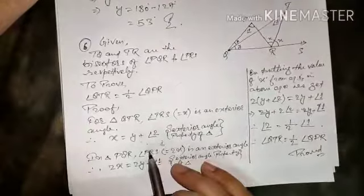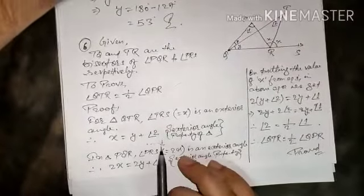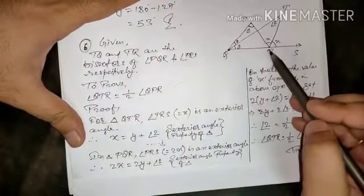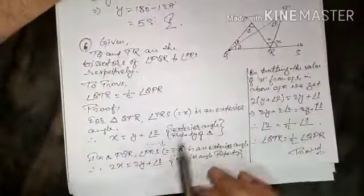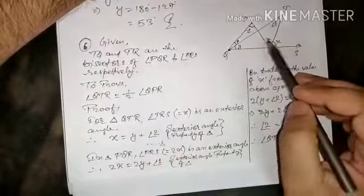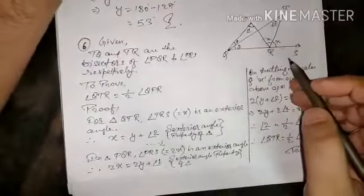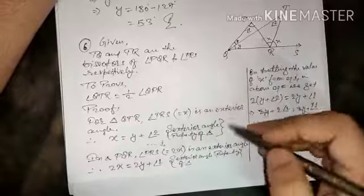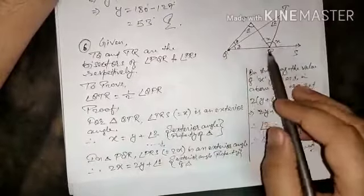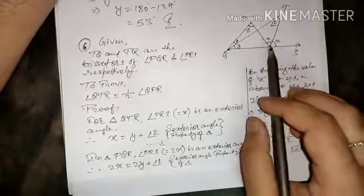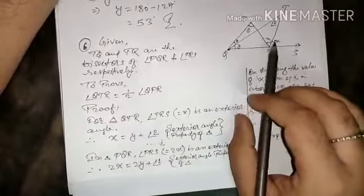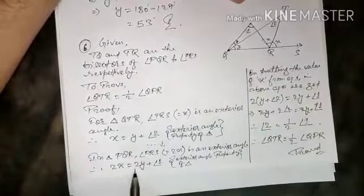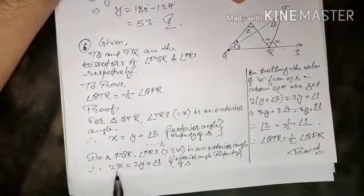Now in triangle PQR, there is another triangle. Angle PRS — we can see this is an exterior angle. So X plus X equals 2X, and since PRS is an exterior angle, we again use the exterior angle property: 2X equals 2Y plus angle 1.